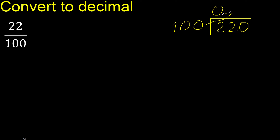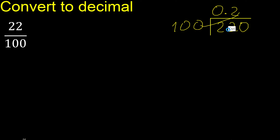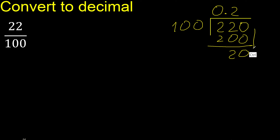Therefore, 100 multiplied by which number is nearest to 220? 2 — but not greater. Multiplied by 3 is 300, which is greater. Therefore multiplied by 2 is 200. Subtract: remainder is 20. There is no number that goes down, therefore complete — always complete with 0. Point is here.